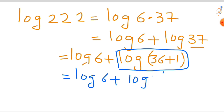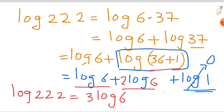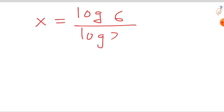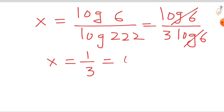We know that log 1 value is 0, so that term becomes 0. The 36 can be written as 6 squared, so it is in the form log(a^m), and the formula gives m times log a, meaning the power comes to the front: that is 2 log 6. Adding the log 6 term from before gives 2 log 6 plus 1 log 6 equals 3 log 6. So log 222 equals 3 log 6. Substituting back: x equals log 6 divided by 3 log 6. The log 6 terms cancel, giving x equals 1/3, which is approximately 0.33.